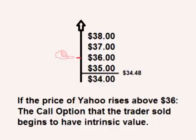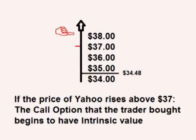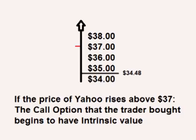If the price of Yahoo rises above $36, the call option that the trader sold begins to have intrinsic value. If the price of Yahoo rises above $37, the call option that the trader bought also begins to have intrinsic value. This means that for $37 and above, the loss on the call option that was sold is the same amount as the gain on the call option that was bought.